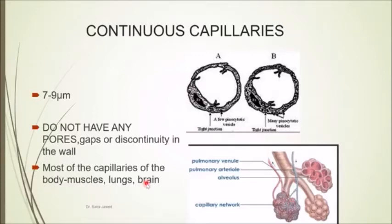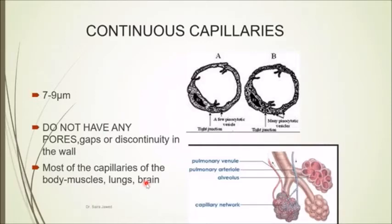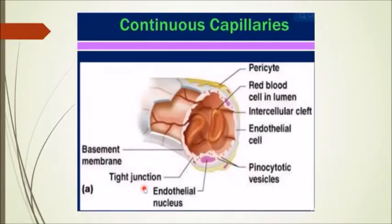In the brain, there is a blood brain barrier — very specific substances are allowed in. Every kind of substance cannot go to the brain; for example, proteins meant for muscles cannot enter the brain. Similarly, certain medicines can cross the blood brain barrier while others are not allowed to. So the muscles, lungs, and brain all contain continuous capillaries.